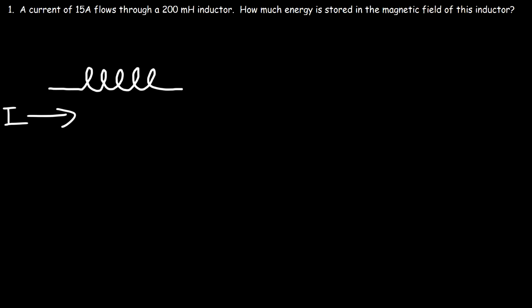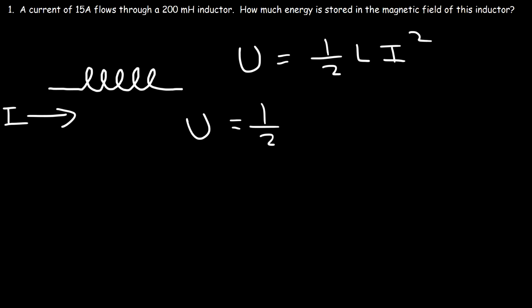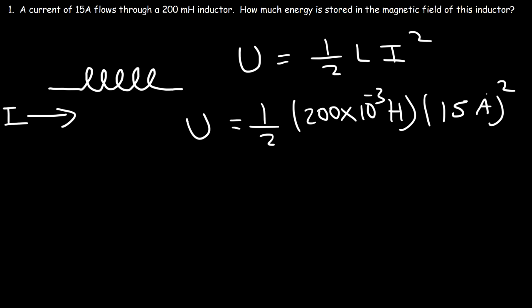How much energy is stored in the magnetic field of this inductor? The energy stored is one-half the inductance times the square of the current. We have a 200 millihenry inductor — that's 200 times 10 to the minus 3 henries — and the current is 15 amps, which we need to square. The potential energy stored in this inductor is 22.5 joules.